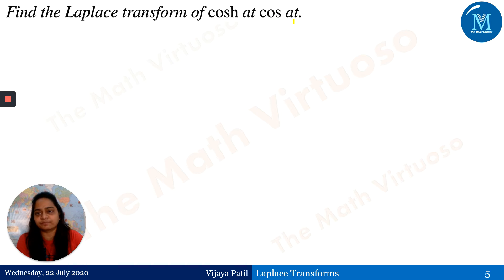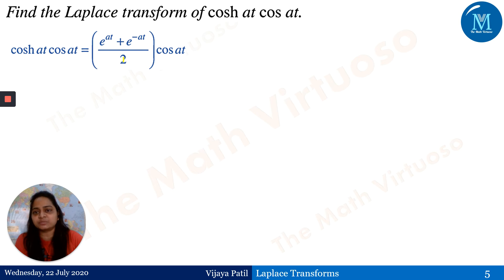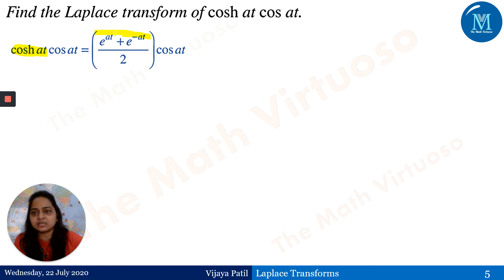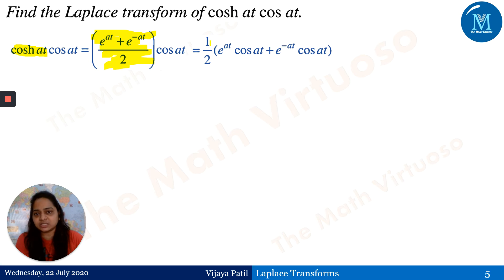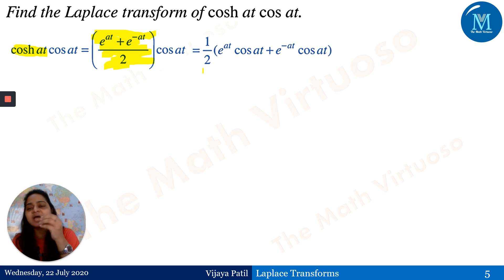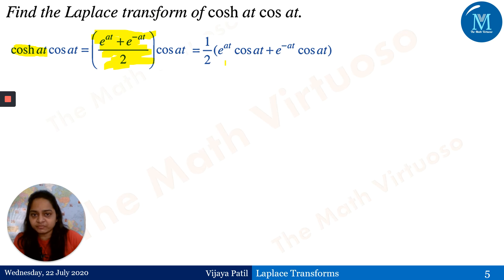Now find the Laplace transform of cosh(at)·cos(at). We know cosh(at) = (e^(at) + e^(-at))/2. So cosh(at)·cos(at) = (e^(at)·cos(at) + e^(-at)·cos(at))/2. Applying linearity, this becomes (1/2)·[Laplace of e^(at)·cos(at) + Laplace of e^(-at)·cos(at)].